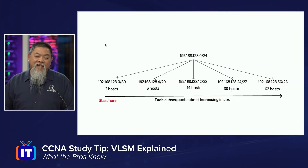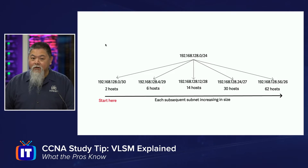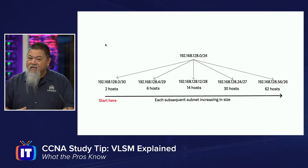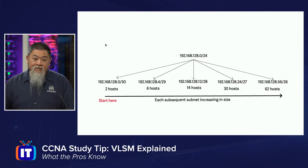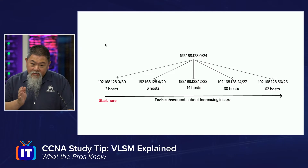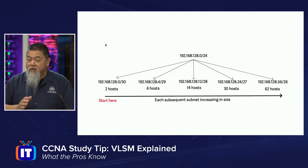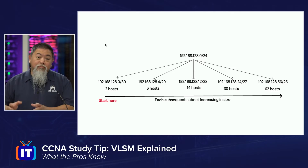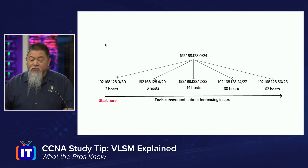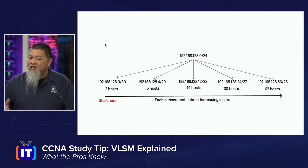Many CCNA candidates, as they learn how to do subnetting, take to that fairly quickly and easily. But when it comes to variable link subnet masking, that's when they start running into issues, because they begin with that same idea of creating equal but smaller and different networks. With variable link subnet masks, remember that we're actually having different subnets within the block that we're doing. Here's a typical example of how most candidates begin to tackle this, and then they get frustrated.